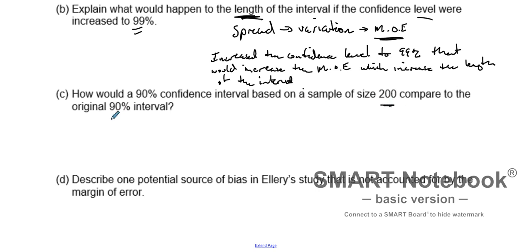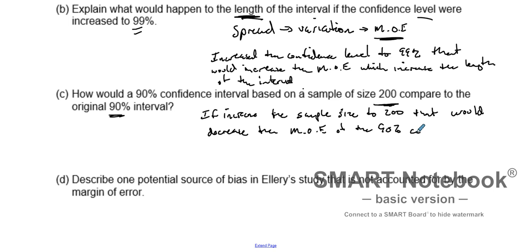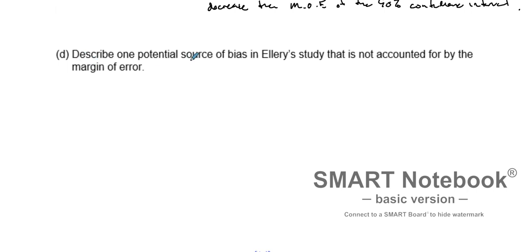How would a 90% confidence interval based on a sample of 200 compare to the original 90% interval? We increased the sample size to 200. If you increase the sample size, that decreases the spread and decreases variation, because standard deviations get smaller. So that actually decreases the margin of error of the 90% confidence interval — increasing sample size decreases variation, spread, and standard deviation.